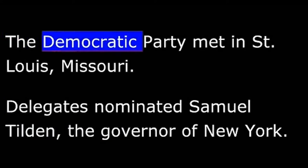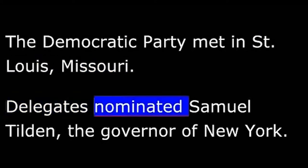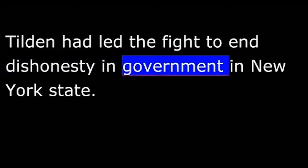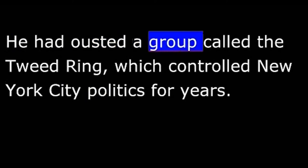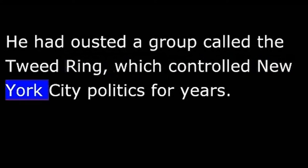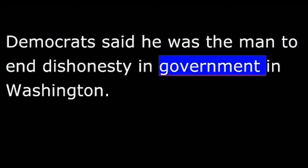The Democratic Party met in St. Louis, Missouri. Delegates nominated Samuel Tilden, the governor of New York. Tilden had led the fight to end dishonesty in government in New York State. He had ousted a group called the Tweed Ring, which controlled New York City politics for years. Democrats said he was the man to end dishonesty in government in Washington.